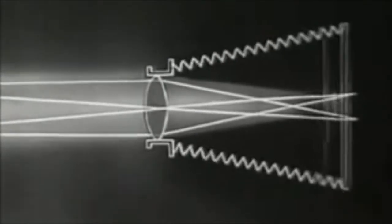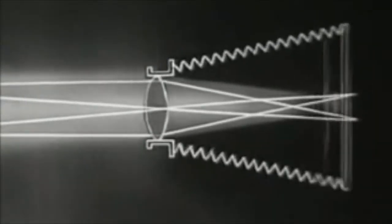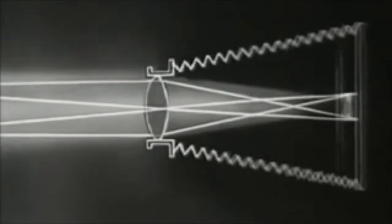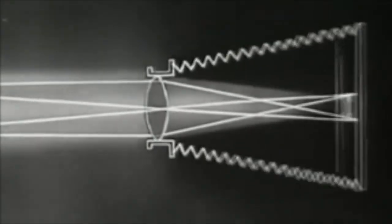Now compare this with the focal adjustment of a camera. Here the lens remains unchanged, but the film itself is moved until it reaches a sharp focal image.